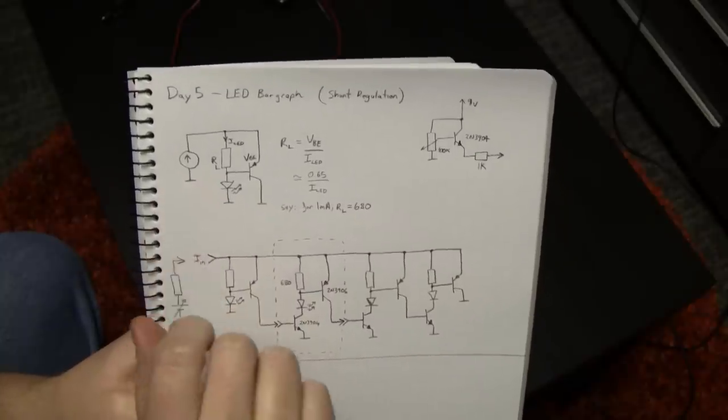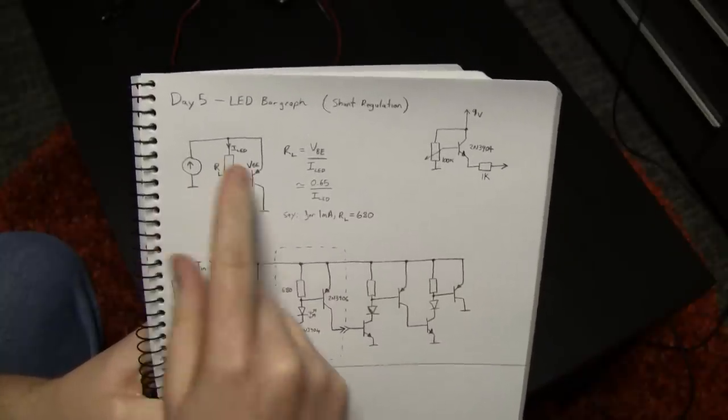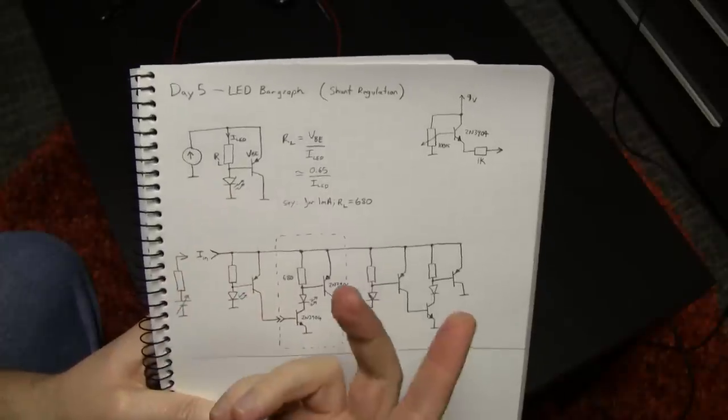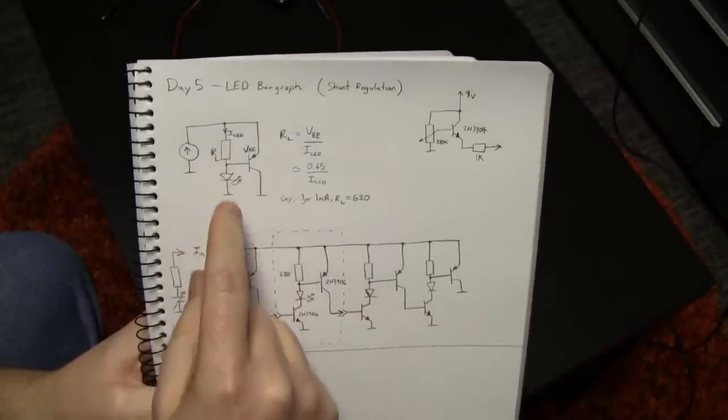In this particular case, this current source is essentially arbitrary and you can turn the current up. And as the current increases, if you exceed the limit of the LED, you're going to blow the thing up.